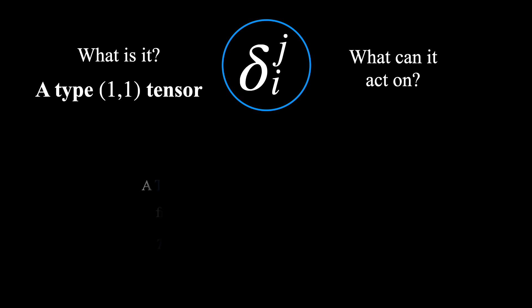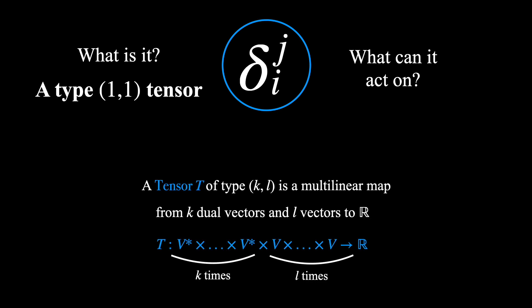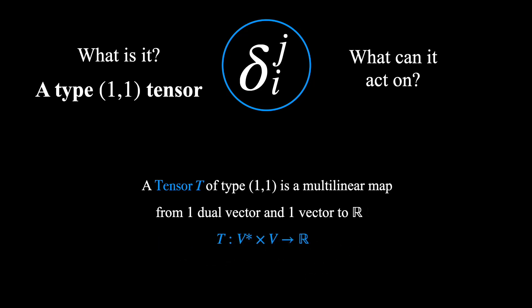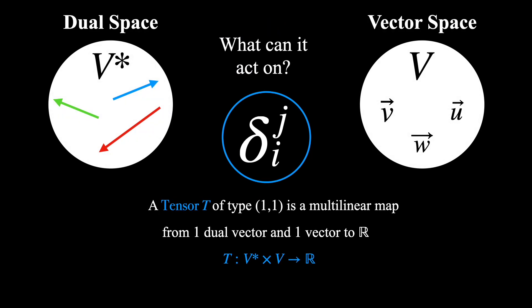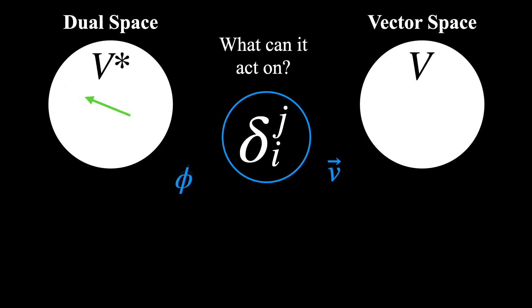Now what about the second question, what can it act on? To answer this, let's recall what the definition of a tensor is. A tensor of type (K,L) is a multilinear map from K dual vectors and L vectors to the real numbers. So in the context of the Kronecker Delta tensor, we would say that it is a type (1,1) tensor that is a multilinear map from one dual vector and one vector to the real numbers.